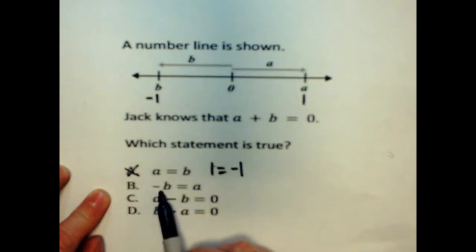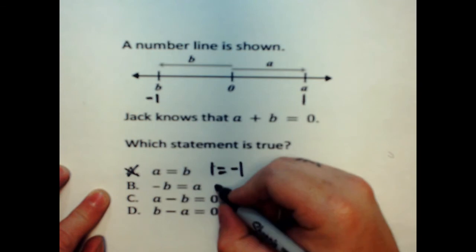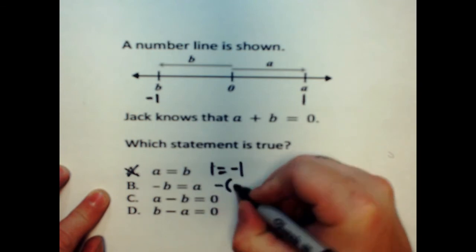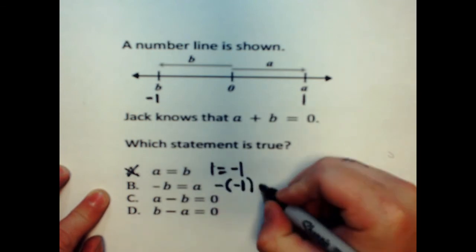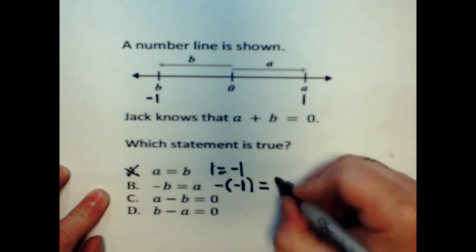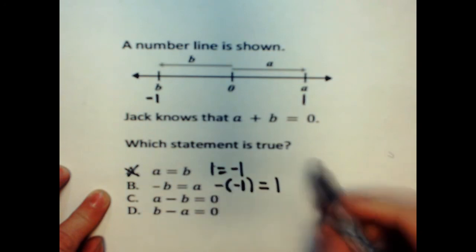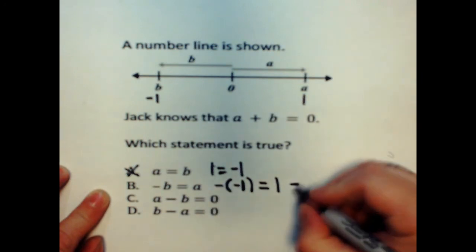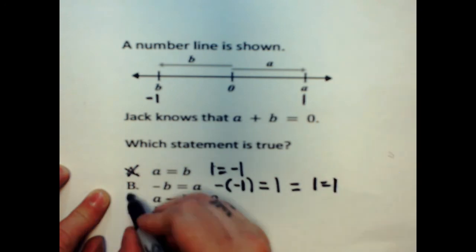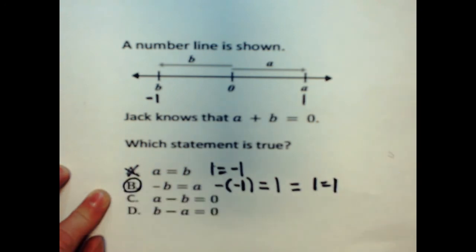Now, I can look here and say, does a negative B equal one? Well, let me think. If I have a negative, and I put in negative one for B, does that equal one? Well, I can take a negative times a negative, because that's what that means on the outside. So, negative times a negative would give me a positive. And this would be equivalent to one equals one. So yeah, I could say B is definitely, definitely true.